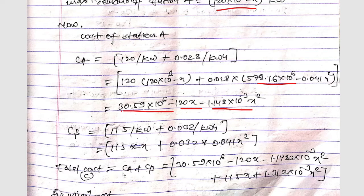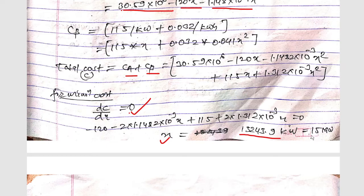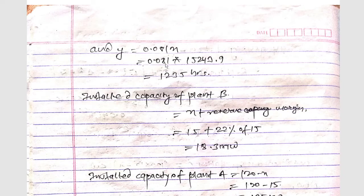The total cost C = CA + CB. For minimum cost, we set dC/dx = 0 and solve. Taking the first derivative and equating to zero gives the value of X, the maximum demand for station B. Solving yields X = 15,243.3 kW, approximately 15 megawatt, and Y = 0.081 × X = 1235 hours.